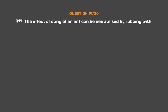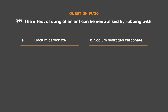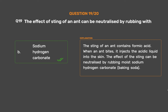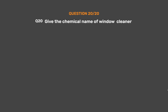Question number 19. The effect of the sting of an ant can be neutralized by rubbing with — Option A: Glacium carbonate. Option B: Sodium hydrogen carbonate. Option C: Sodium carbonate. Option D: Calcium chloride. The correct answer is Option B: Sodium hydrogen carbonate. The sting of an ant contains formic acid. When an ant bites, it injects the acidic liquid into the skin. The effect can be neutralized by rubbing moist sodium hydrogen carbonate, baking soda.